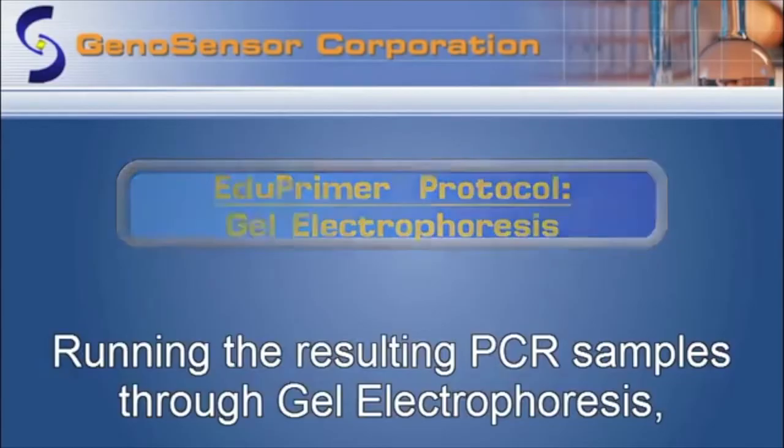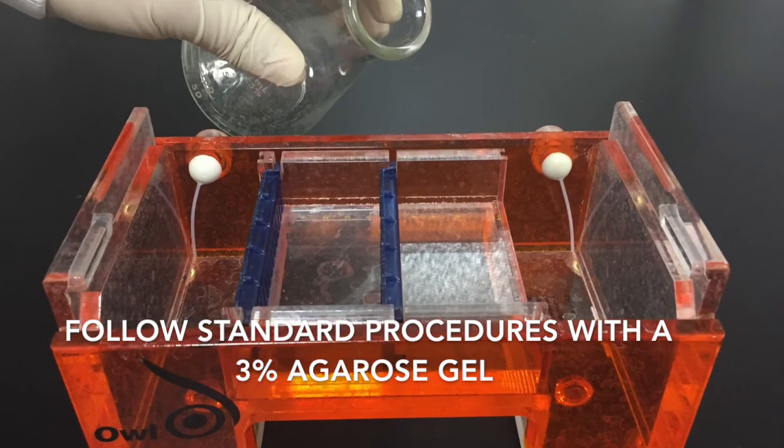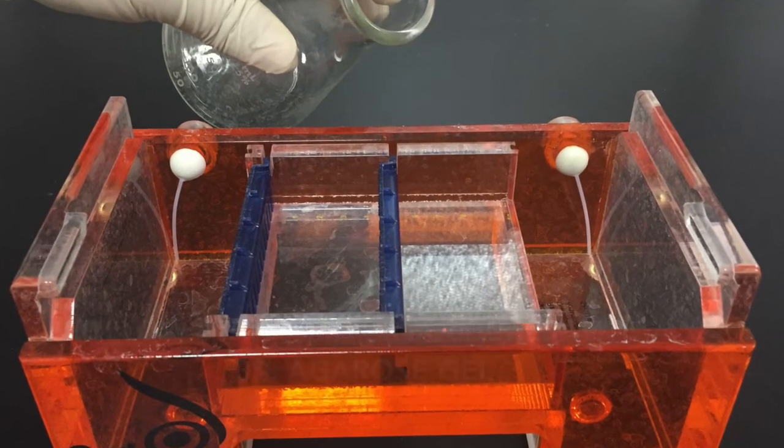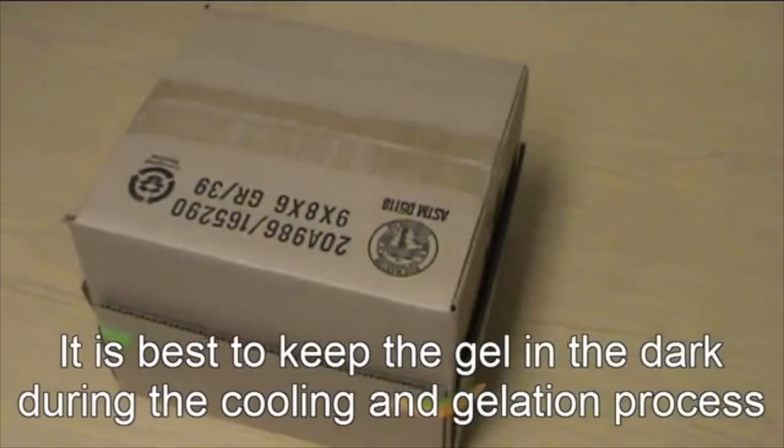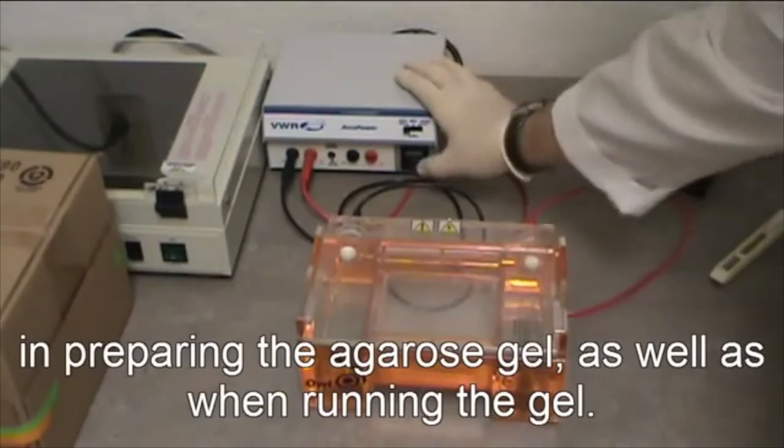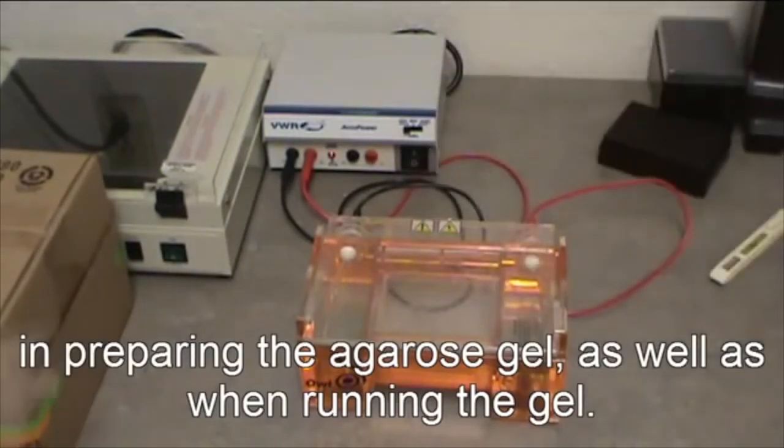Running the resulting PCR samples through gel electrophoresis follows standard procedures with a 3% agarose gel with DNA dye such as Gelred or CyberSafe. It is best to keep the gel in the dark during the cooling and gelation process in preparing the agarose gel as well as running the gel.